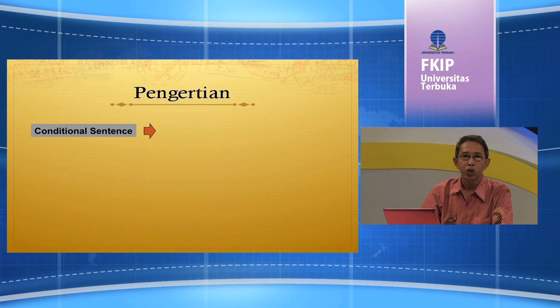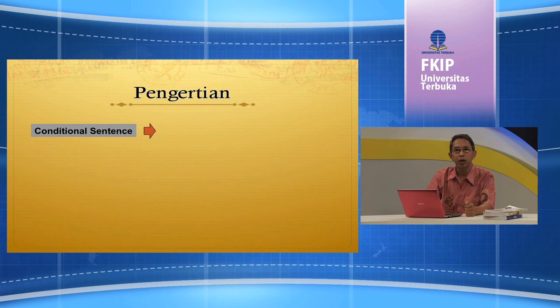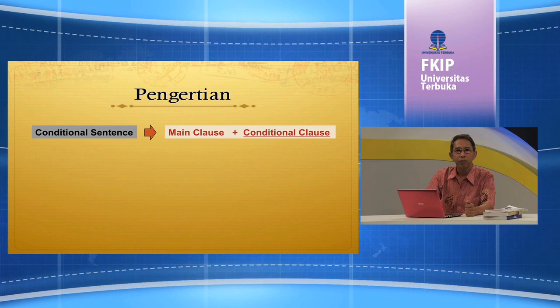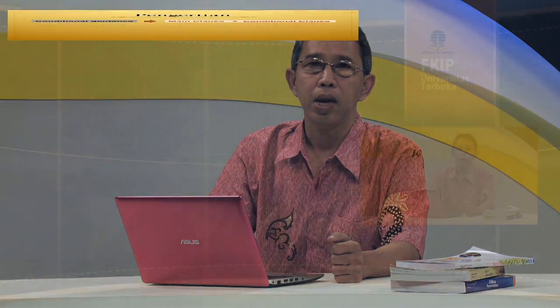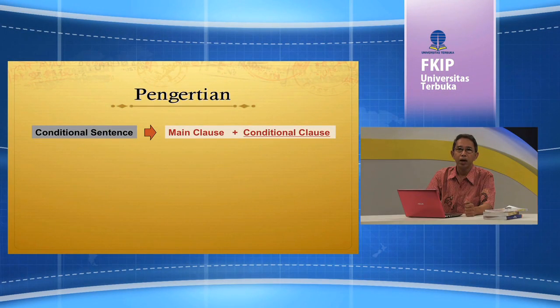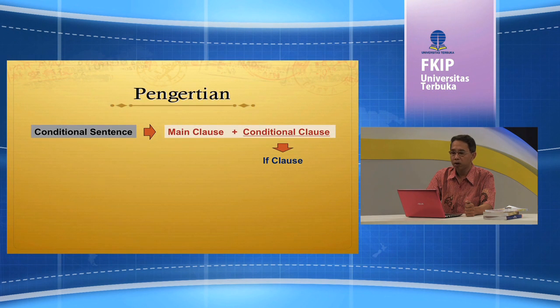Apa itu Conditional Klausis? Conditional Klausis adalah satu klausa yang menjadi bagian dalam satu kalimat pengandaian, atau disebut juga Conditional Sentence. Dalam satu kalimat pengandaian selalu terdapat dua klausa: klausa inti atau main clause, dan klausa bersyarat atau conditional clause. Conditional Klausis dicirikan dengan penggunaan kata 'if' yang berarti jika, kalau, seandainya, atau apabila. Karena penggunaan kata if inilah maka Conditional Klausis sering disebut juga if clause.